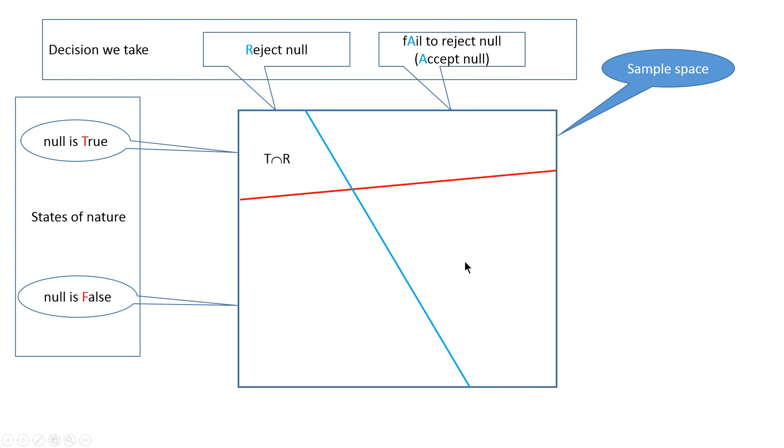The definition of elementary event is that this is the simplest possible event. Here we have four elementary events. One is when the null is true and we reject it, T intersection R. Similarly we have F intersection R, and then there is T intersection A and F intersection A. Once you find the probabilities of these four elementary events, you can find the probabilities of everything in this picture.